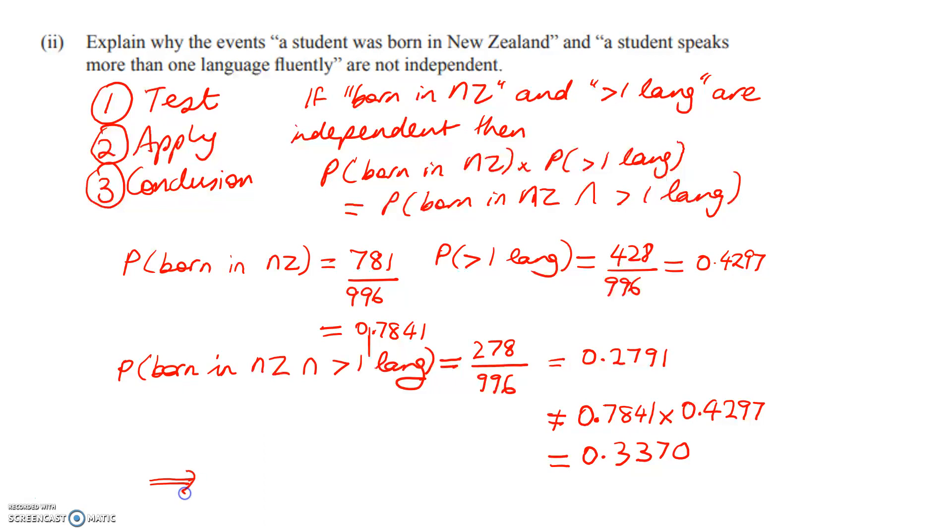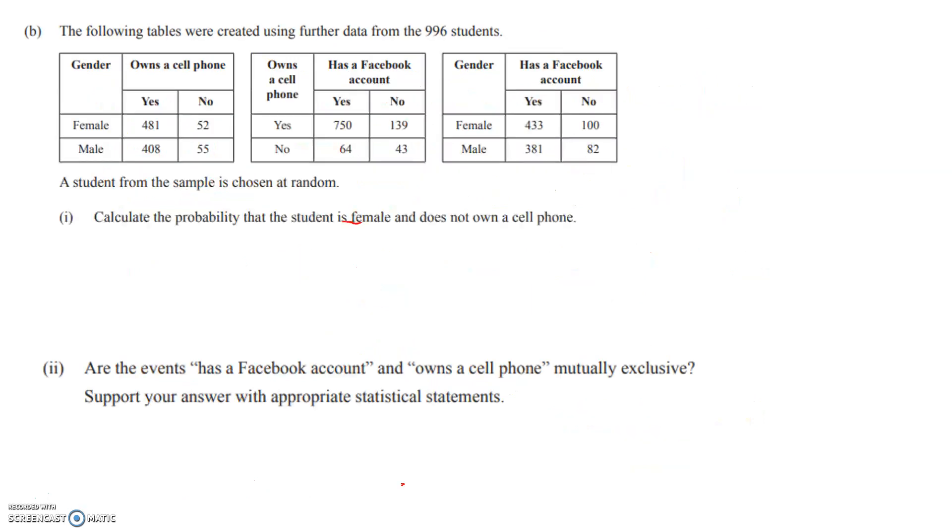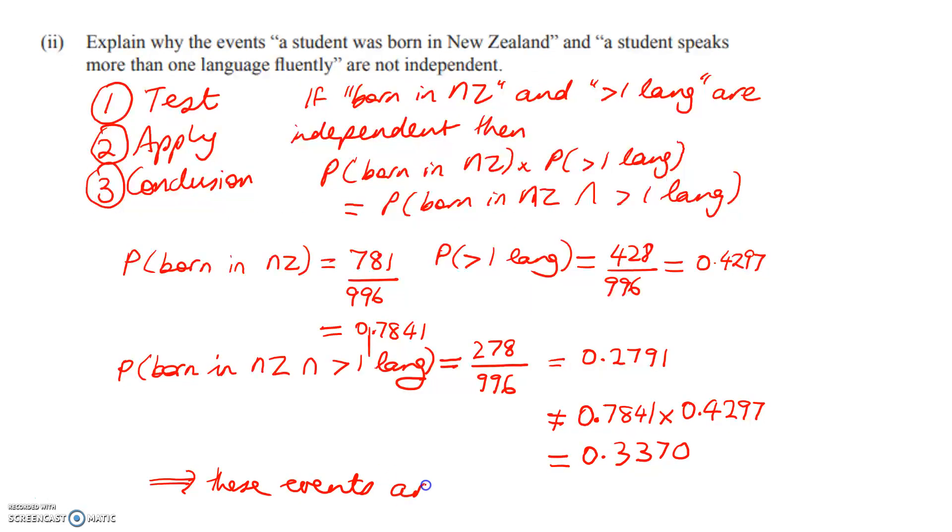And then lastly, I'm going to say because of that, these events aren't independent. That is a very good answer to that question because it shows that you know what the test is and you've applied the test and you've made a conclusion from the test. We're going to use that method from now on when we're answering questions about this and mutually exclusive.